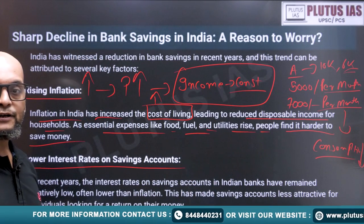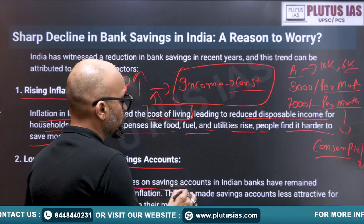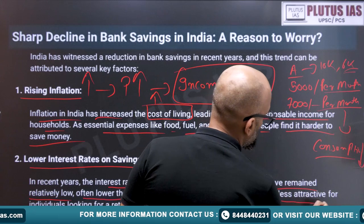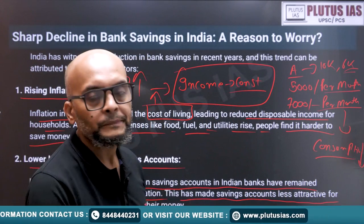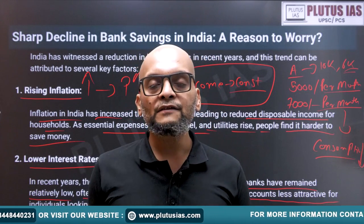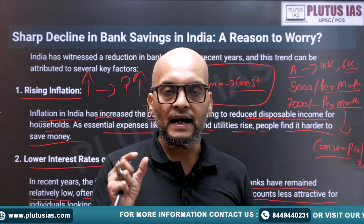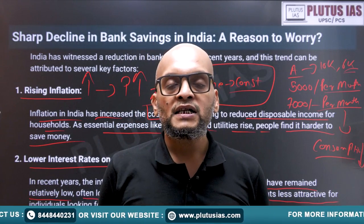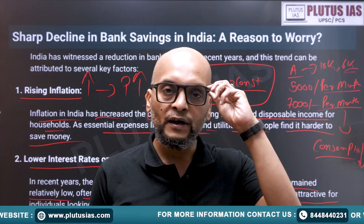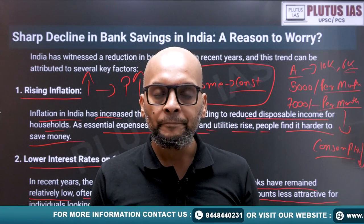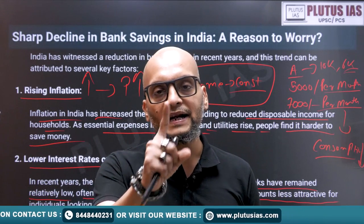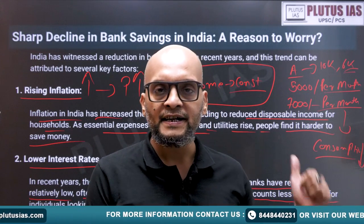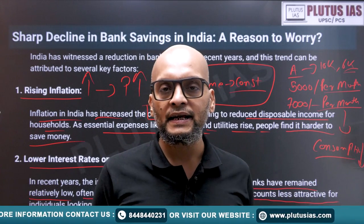The second reason is lower interest rates on savings accounts. In recent years, interest rates on savings accounts in Indian banks have remained relatively low, often lower than inflation. This has made savings accounts less attractive for individuals who seek more return on their money. Savings accounts give 3% interest while inflation is 6% — just double. This means that if you deposit 100 rupees in a savings account, your money is actually losing its value because the real return is negative. This is why people are moving away from savings accounts.